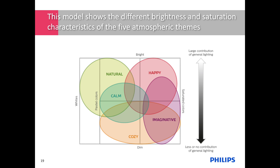Let's first have a look at the light effect in relation to brightness, contrast, and saturation. We have mapped the themes in this scheme, showing how we can make different light ambiances by just changing brightness, saturation, and the contribution of surrounding white light. The vertical axis indicates brightness levels — top is bright with a large contribution of general lighting, bottom is dim with little to no general lighting. The horizontal axis indicates color, from white and pastel on the left to saturated colors on the right.